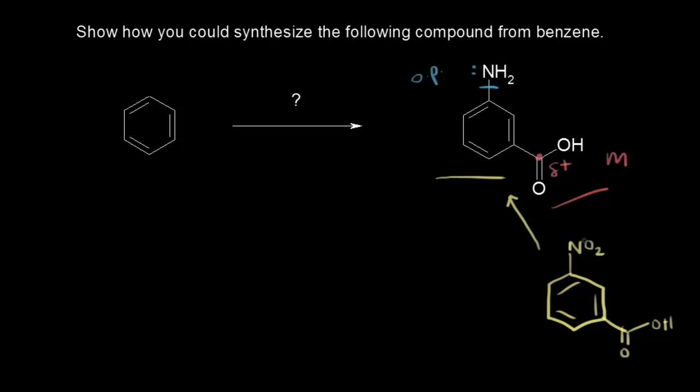There are many ways to reduce a nitro group to an amino group. One thing you could use would be a metal like iron and some hydrochloric acid. You could have used tin. You could have also used hydrogen and a metal catalyst like nickel. So there are many ways to reduce a nitro group to an amino group on a benzene ring.